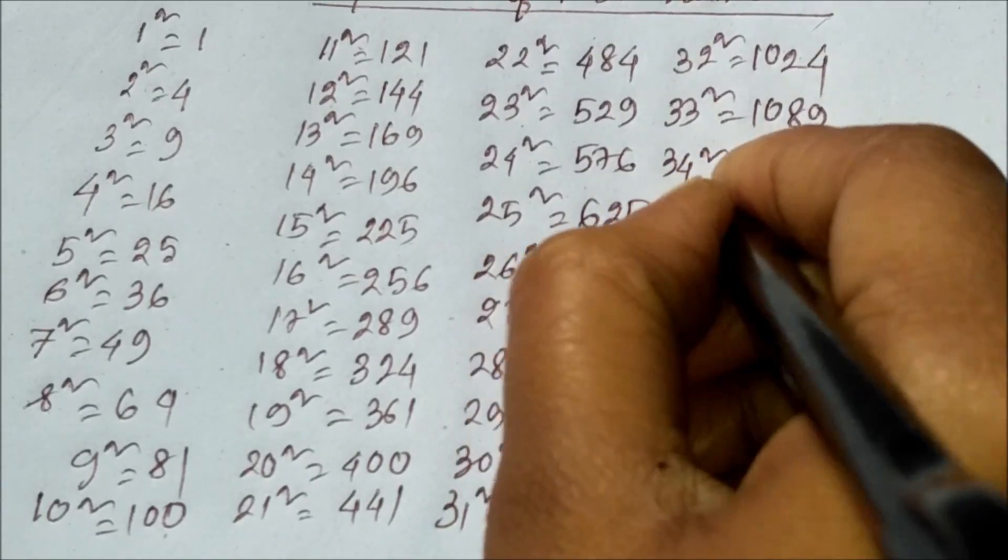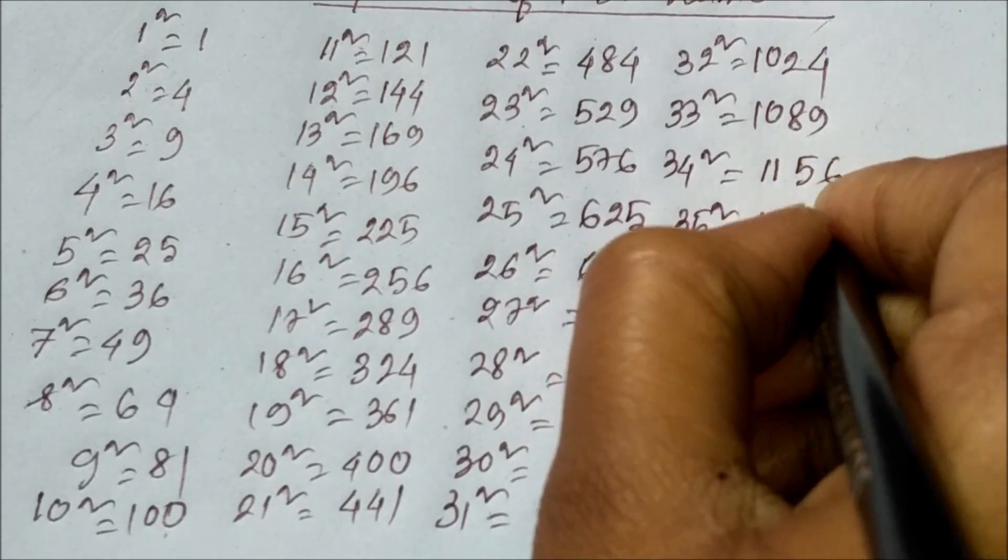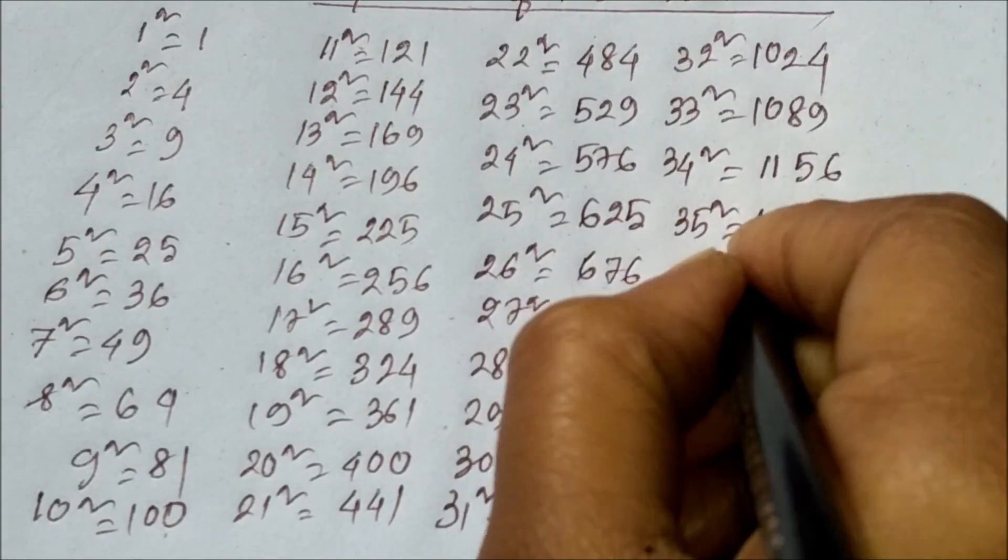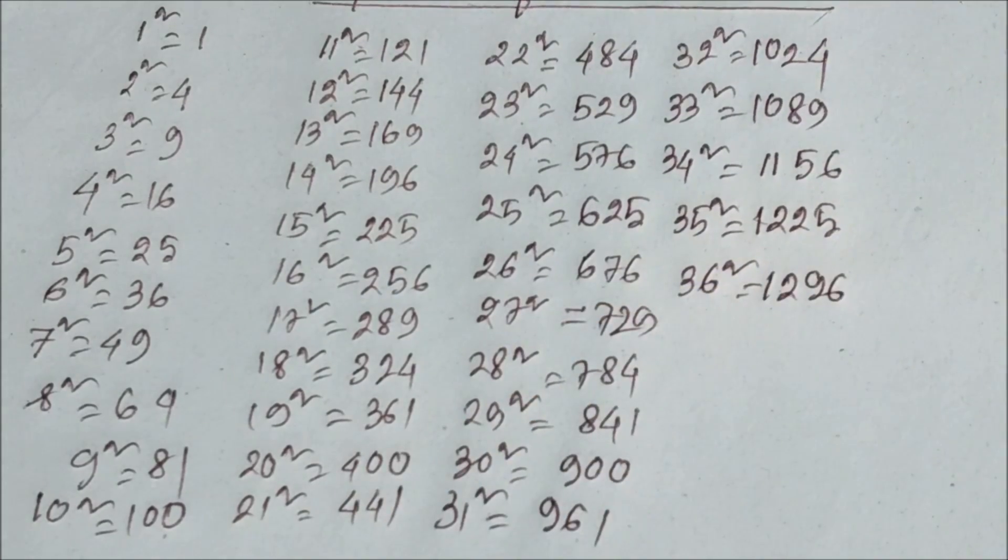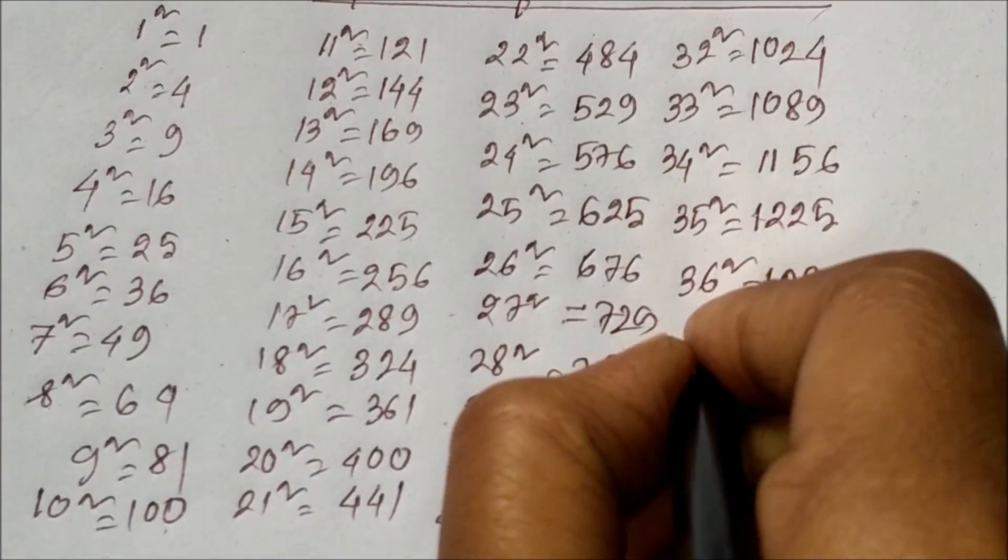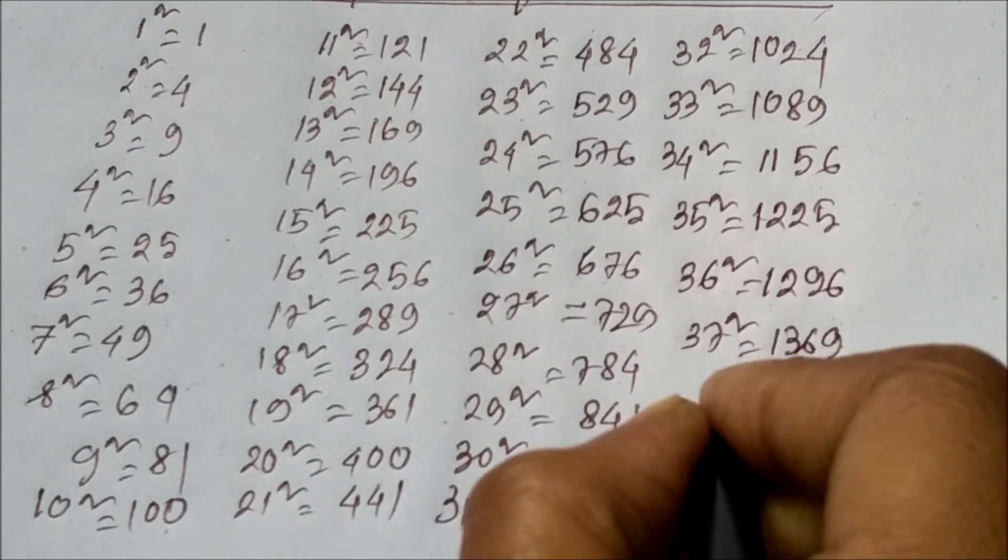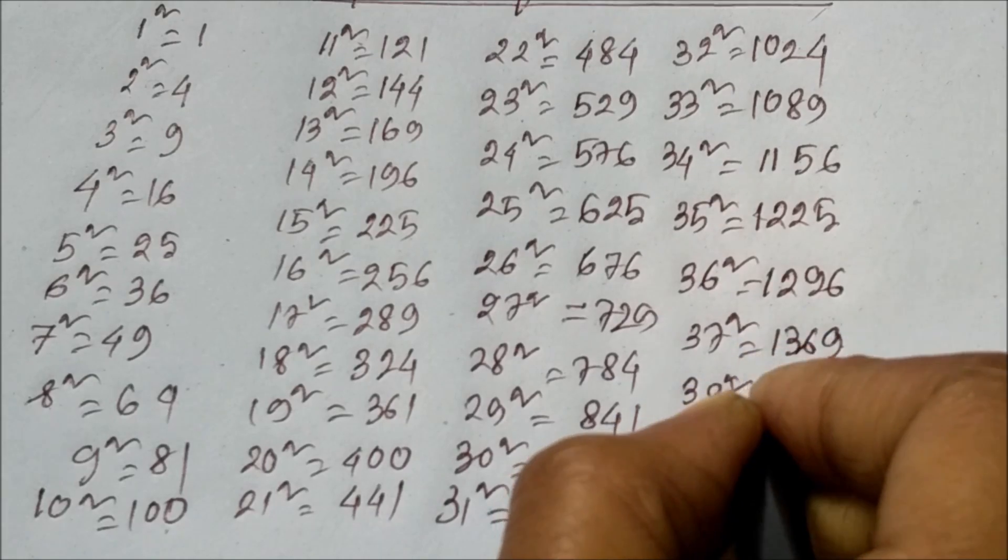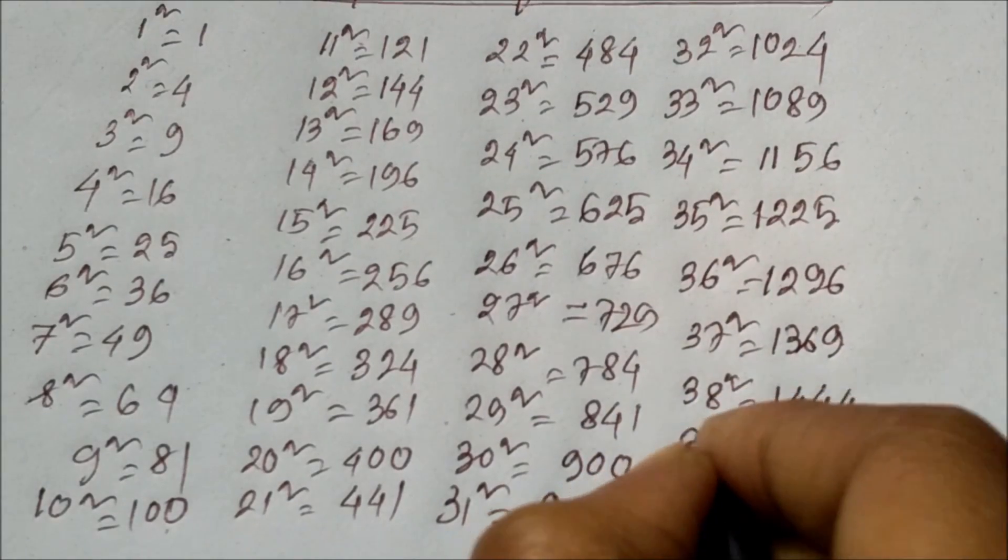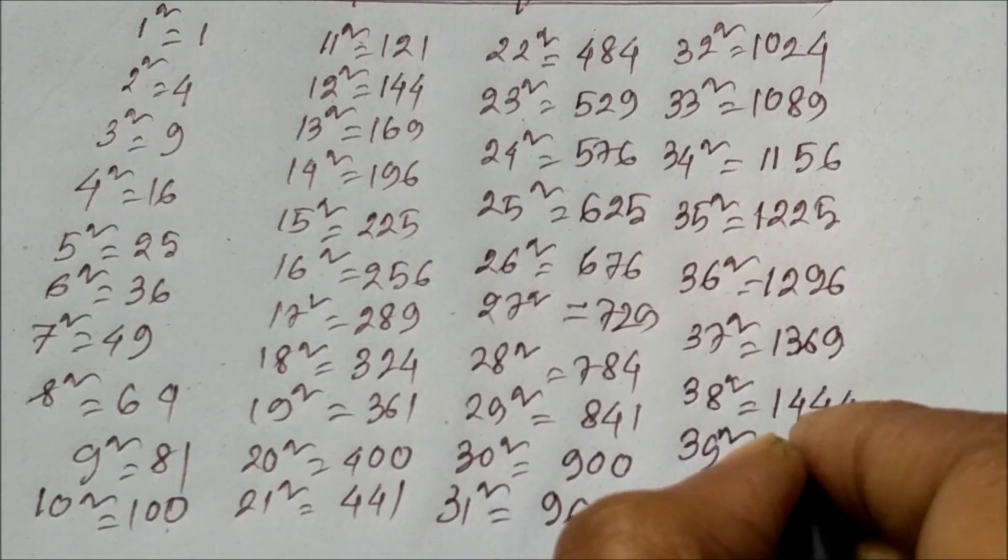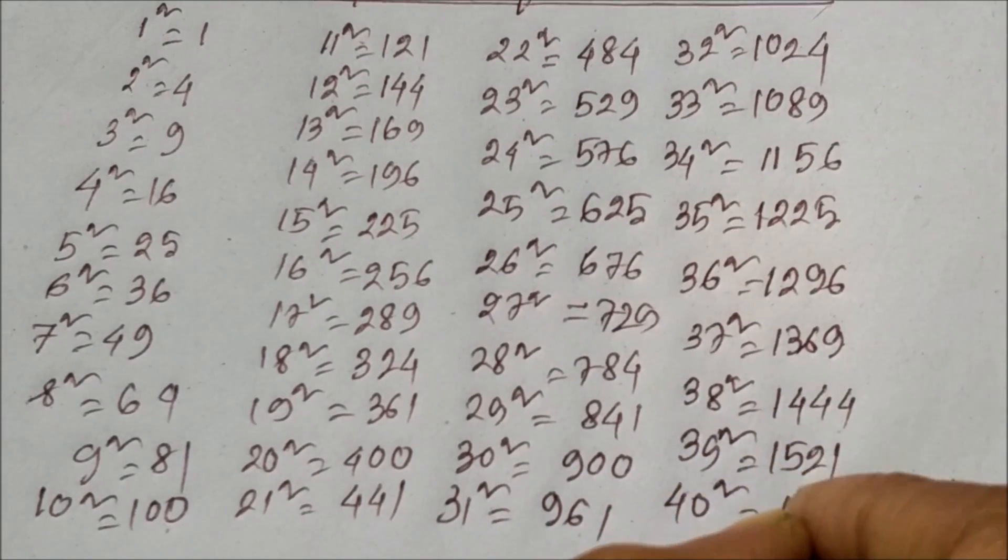35 square equals 1225, 36 square equals 1296, 37 square equals 1369, 38 square equals 1444, 39 square equals 1521, 40 square equals 1600.